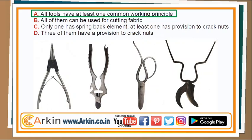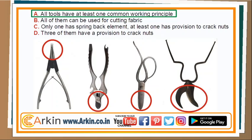Option B: All of them can be used for cutting fabric. Now observe the blades of these tools. The first point is specifically designed for making holes — it's not good for cutting fabrics. The second tool has heavy blades specifically designed to cut metal wires, not fabrics. The third tool is our regular scissors, whose blades are specifically designed to cut fabrics. The fourth tool is pruning shears, also called secateurs, used on plants to selectively remove branches, buds, flowers, or roots — not good for cutting fabrics. So option B is not correct.